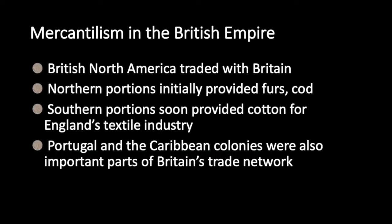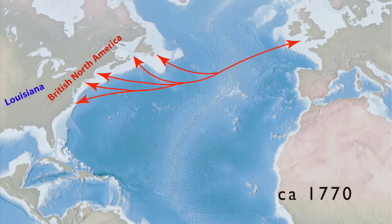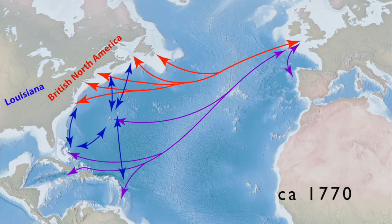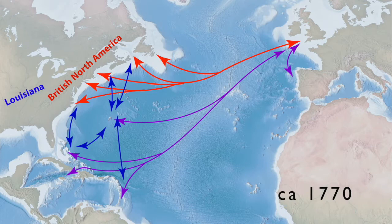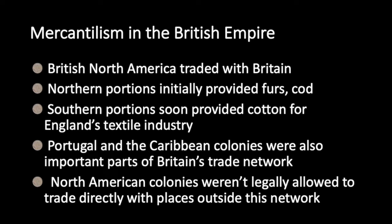Most of the colonial powers had far-reaching mercantile networks. Britain also had extensive trade with Portugal and several colonies in the Caribbean that were part of its mercantile network. This led to a triangular network in which the colonies could trade either with Britain or with each other, but they weren't legally allowed to trade directly with other countries. Not surprisingly, smuggling did occur, and British authorities varied in the degree to which they enforced the laws.